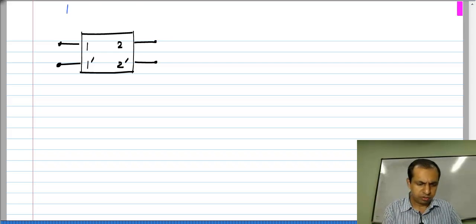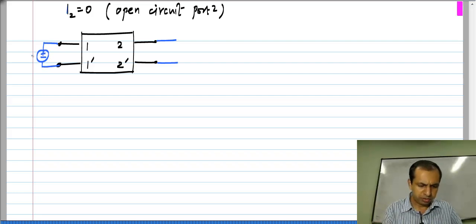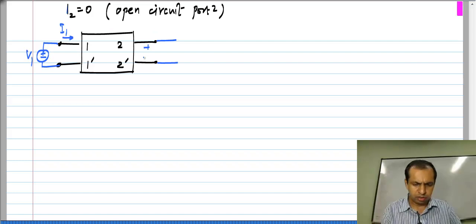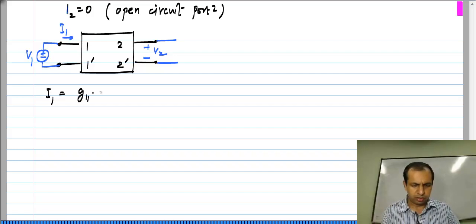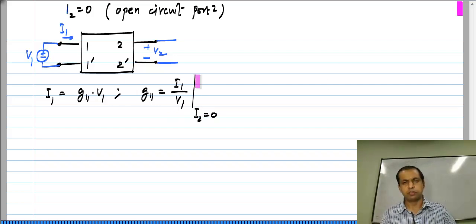First we set I2 to 0 which means that we open circuit port 2 and apply a voltage V1 to port 1 and then we measure I1 and V2. I1 will turn out to be G11 times V1, the contribution from I2 is 0 because I2 itself is 0. This tells you that G11 is I1 by V1 with port 2 open circuited, and you can see that G11 is nothing but the conductance looking into port 1 with port 2 open circuited.